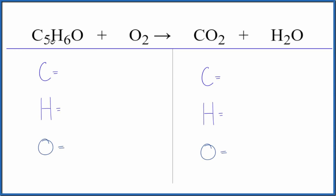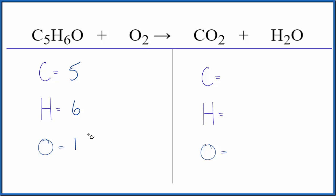To balance this equation, C5H6O plus O2 — this is a combustion reaction. Let's count the atoms up on each side. Let's be careful with the oxygens, because we have five carbons and six hydrogens, then one oxygen plus these two here. Don't forget about those two oxygens there.